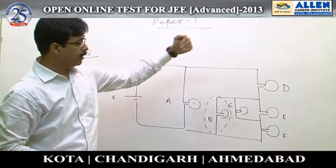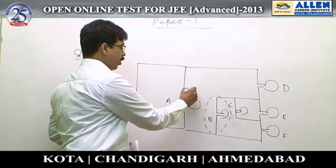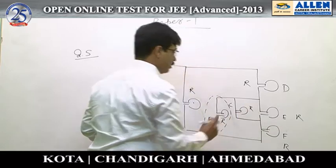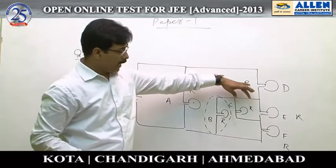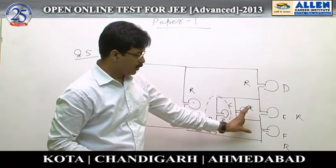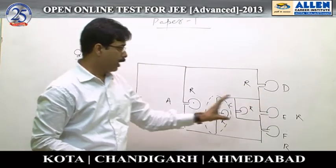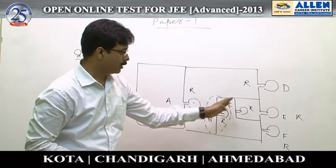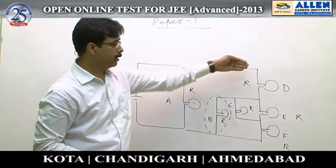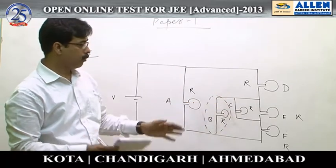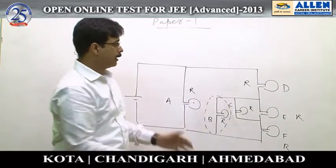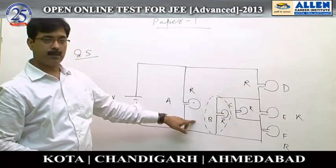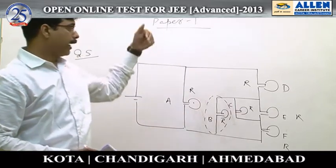Now we have to compare B and D. If we take the resistance of all the bulbs to be R, then the combination of these two is R/2, combination of these two is 3R/2, and 3R/2 and R become 3R/5. That means this whole combination has resistance 3R/5 and this part has R, so the resistance of this part is smaller. Therefore, the potential drop on this part is smaller, meaning potential difference across D is greater than across B. So bulb D is brighter than bulb B.